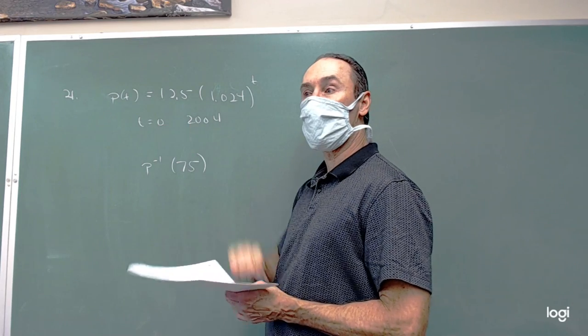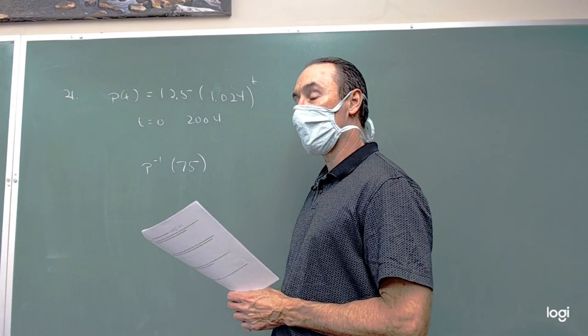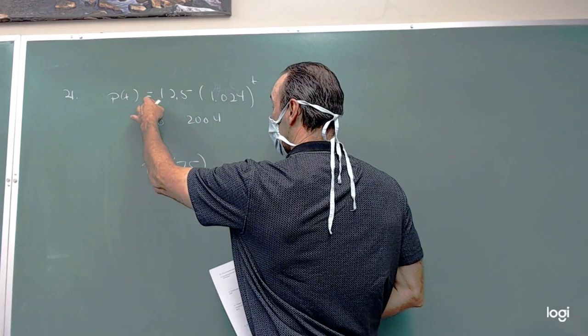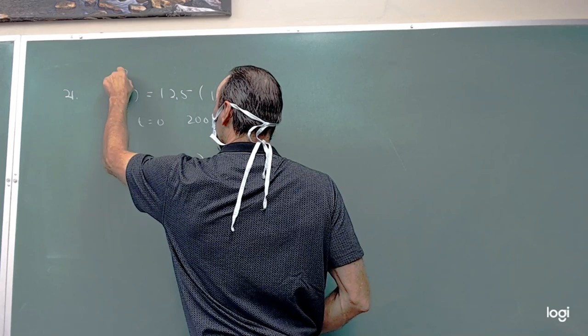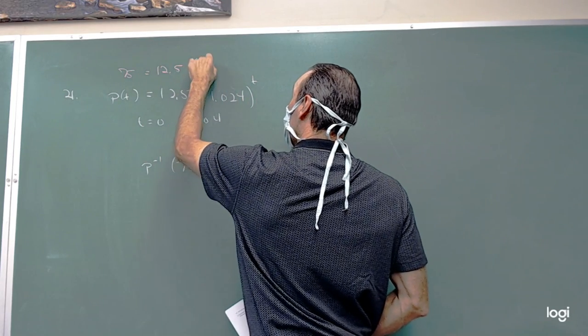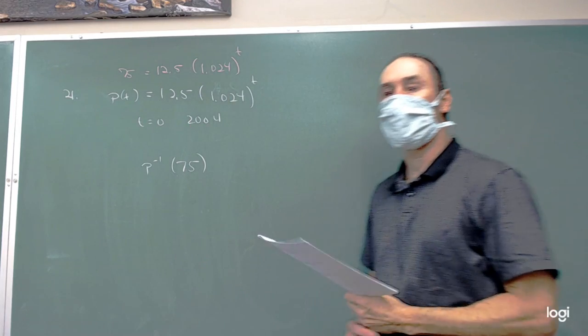It was $12.50 to start with, so at 2.4% increase, this is probably going to take quite a while. The way we find it is we're going to go back to our original and we're going to put the 75 in where the value of P is. This is the equation that we're trying to solve for T.